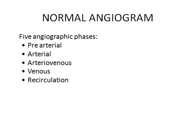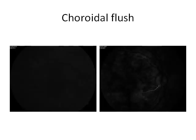A normal angiogram has 5 phases: the pre-arterial or choroidal phase, an arterial phase, arterio-venous phase, venous phase, and the recirculation phase. In the normal angiogram, the first fluorescence begins in the choroid 10 to 12 seconds after injection of the dye, and this is faint, patchy, and irregularly scattered throughout the posterior fundus. The cilioretinal artery begins to fill in this phase.